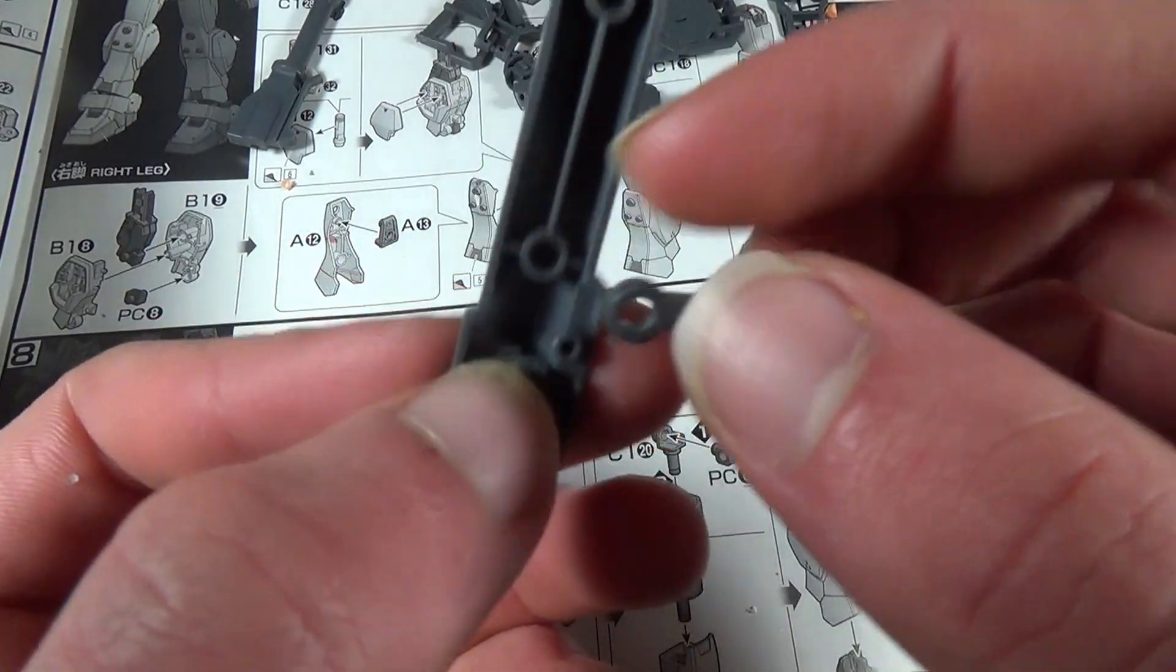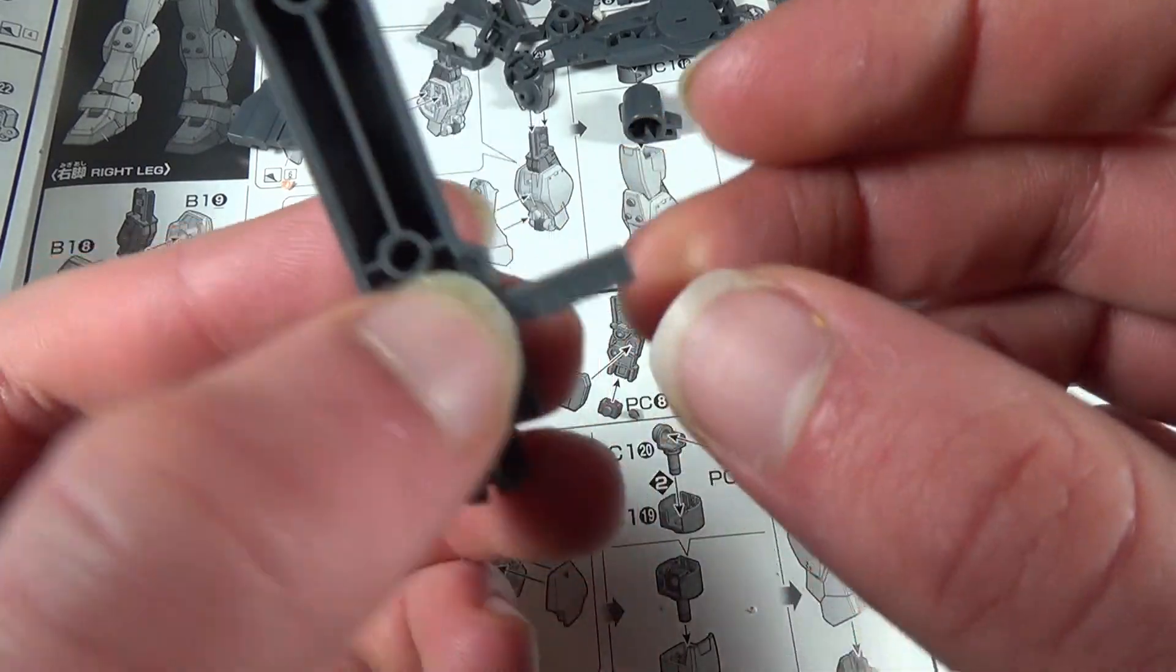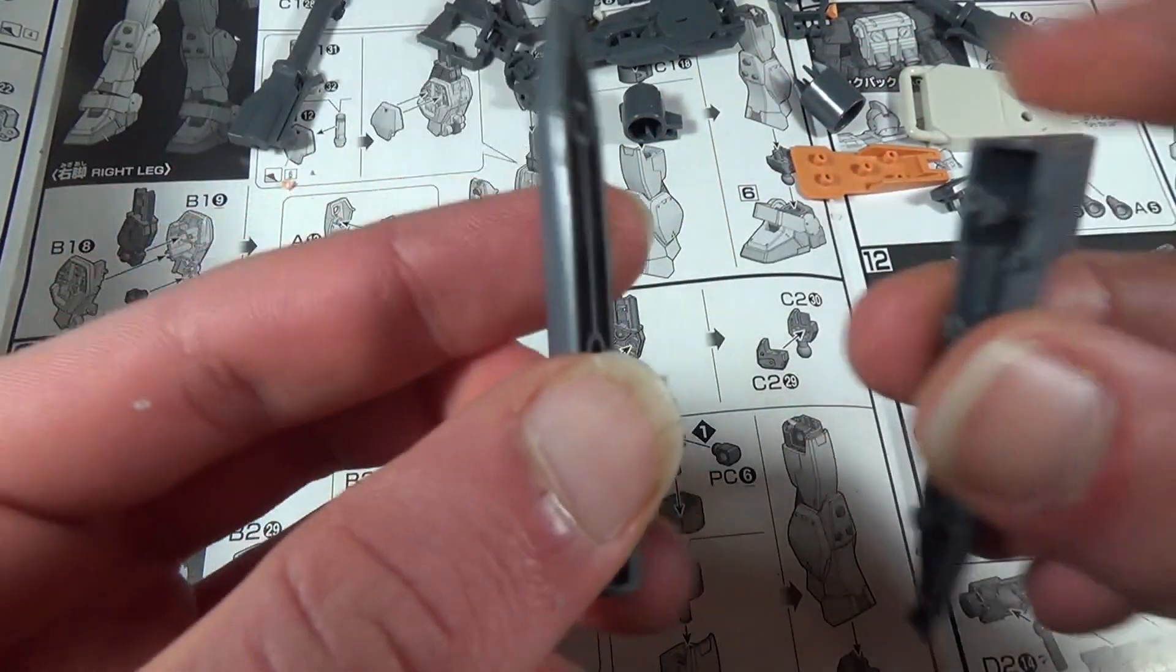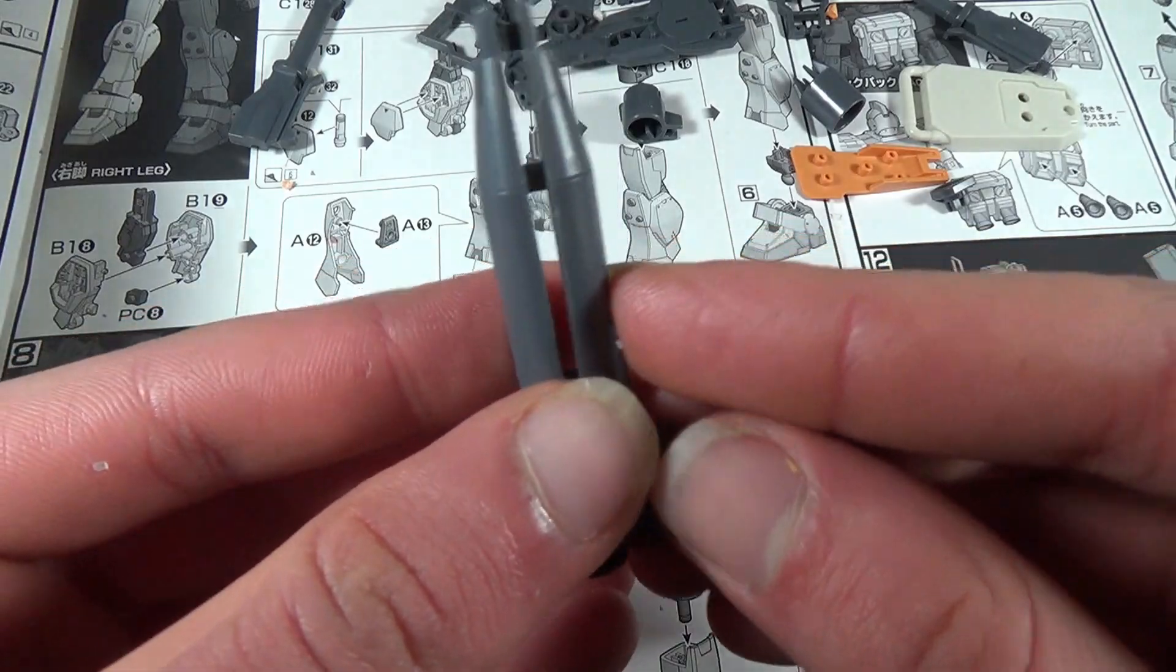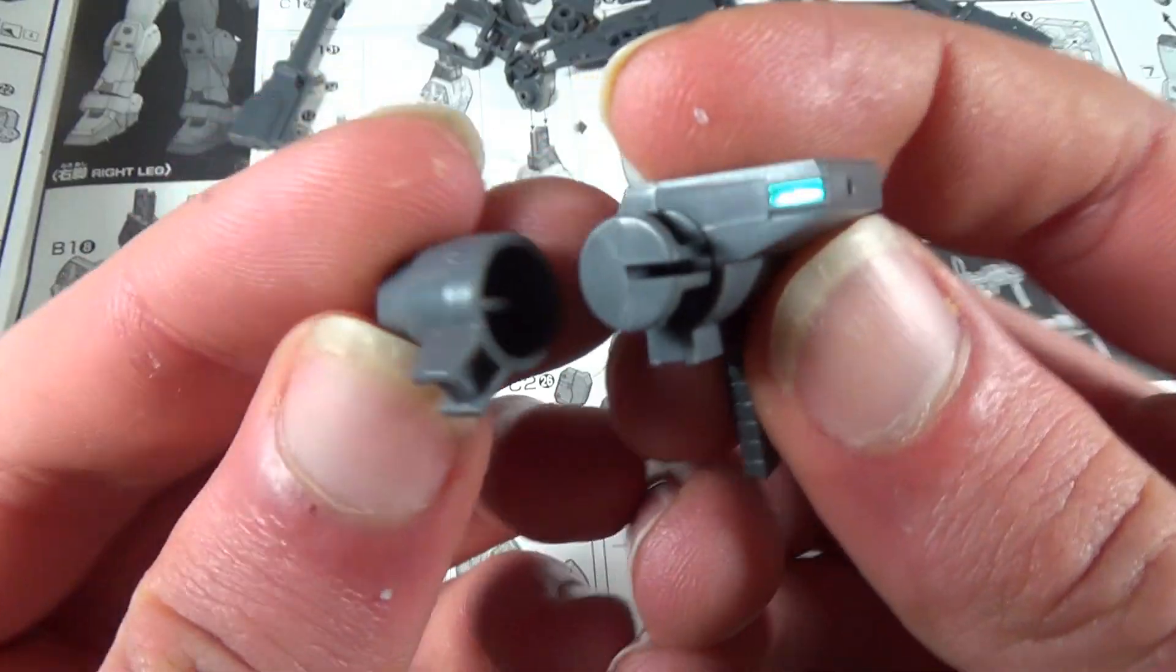And then going one step higher on the weapon scale, we have the net launcher. And the first step of building the net launcher is to just stick this little handle in here. So that way you can then take these two halves, stick them together, then take this piece, put it on here.